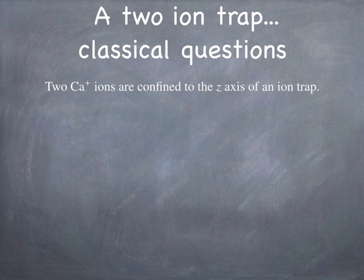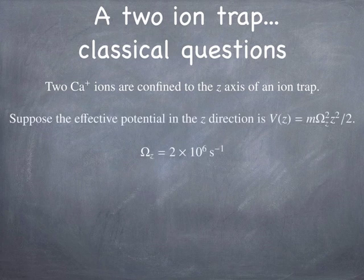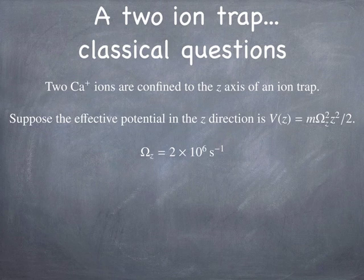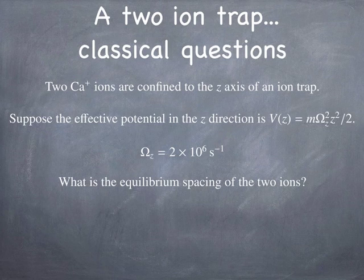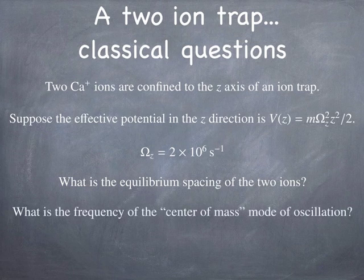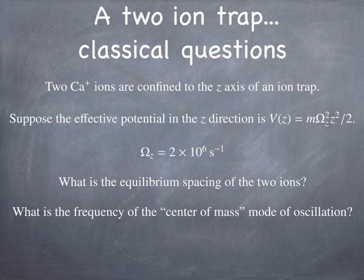And then just classically, I'd like you to work out, given that the potential along the z-direction is a quadratic potential, I'd like you to try to figure out what the equilibrium spacing between the two ions is going to be. These are calcium ions, singly ionized. And then work out any way you can what the frequency of the center of mass mode of oscillation is. This is when both ions always move in the same direction. So they're both moving to the right or they're both moving to the left. That's the center of mass mode.